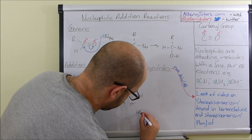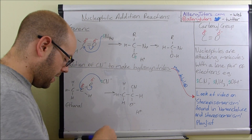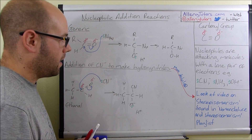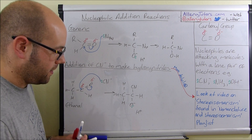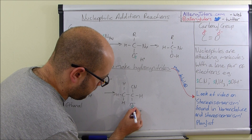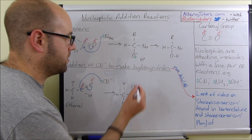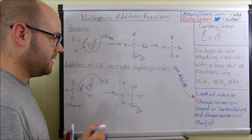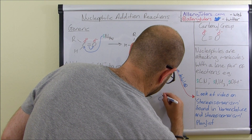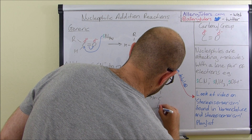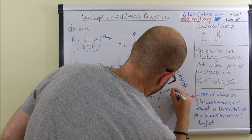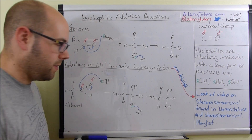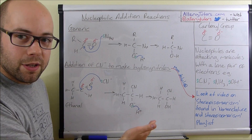Just like in the other example, we have our H plus and the lone pair of electrons on the oxygen. The curly arrow goes from the lone pair on the oxygen onto the H plus. And then effectively what you produce is the final product with an OH group.